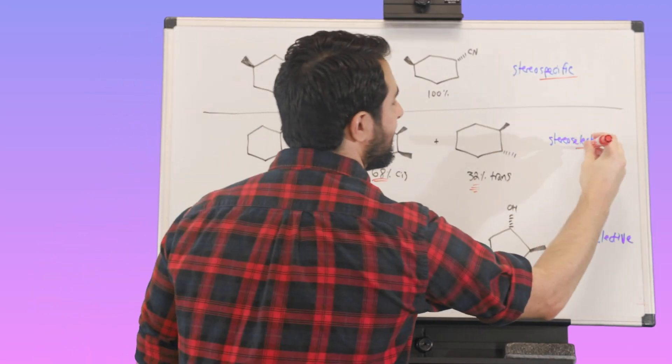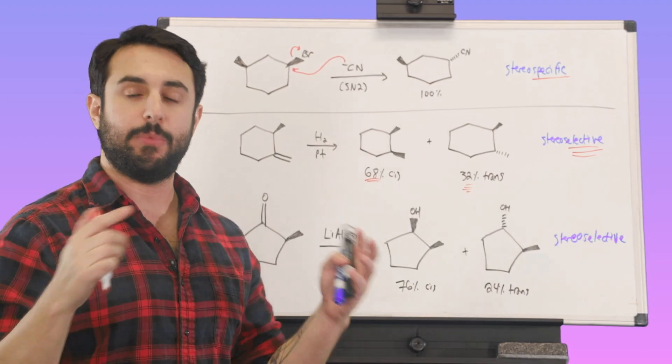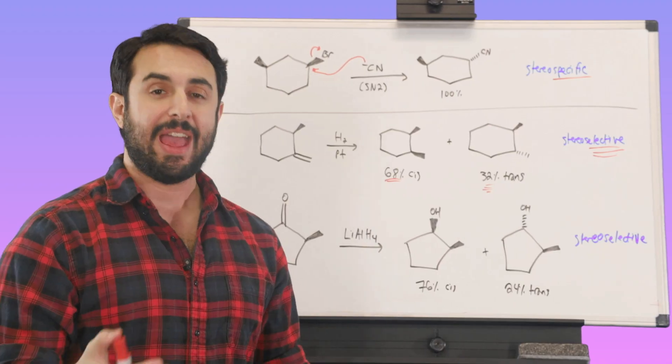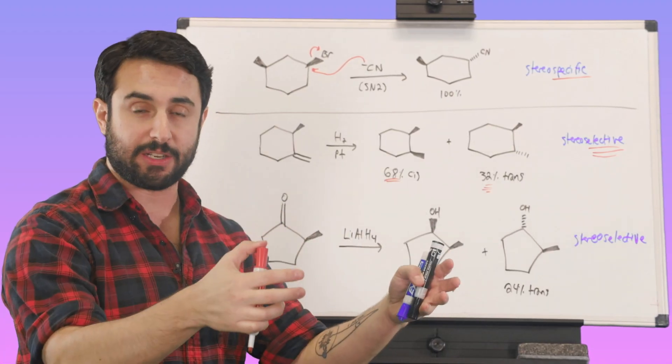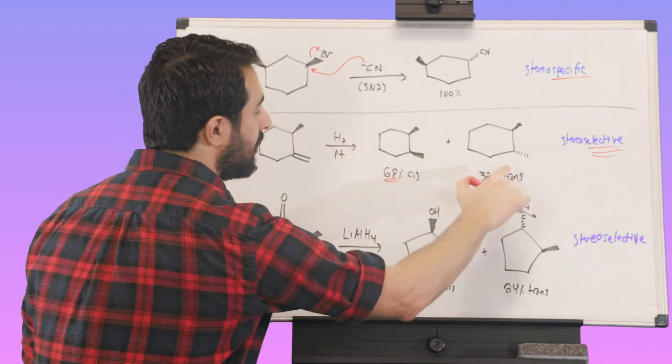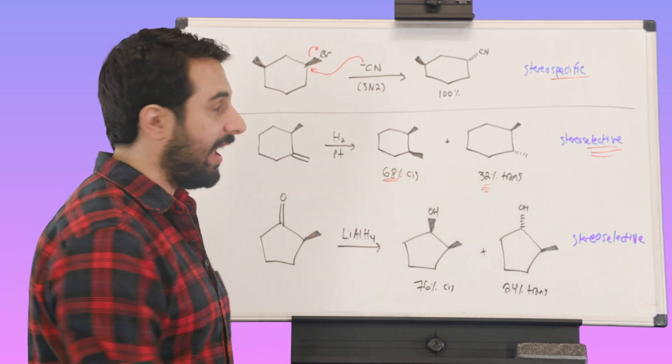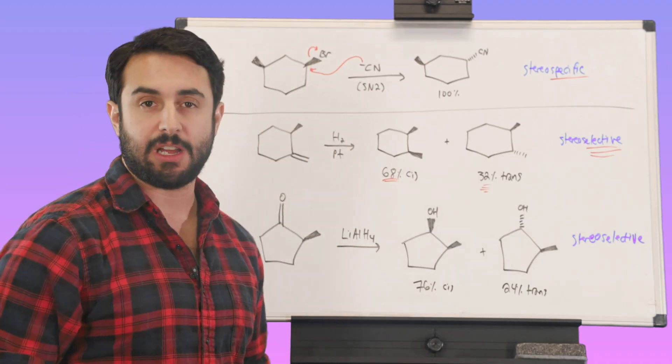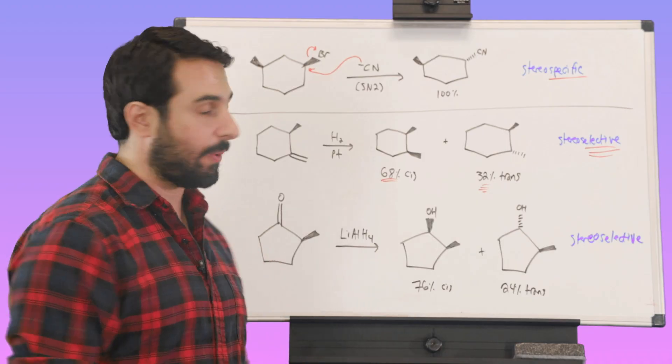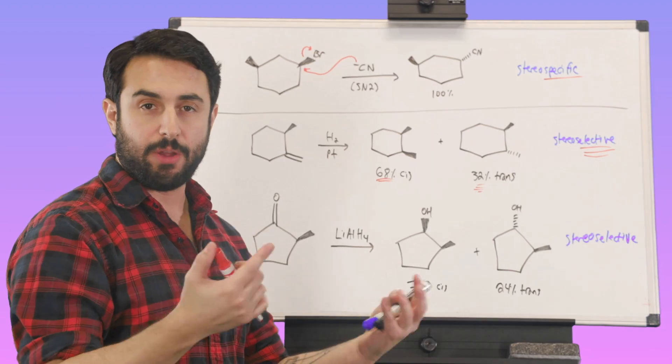And so, the reason we call that selectivity, this is a stereoselective reaction because there's more than one stereochemical possible outcome, and we do get both. However, the system will select one of those products to be more prominent in the product mixture than the other. So we do get both, but we get more of one than the other in a way that is statistically significant and reflects some certain aspect about the substrate or about the reaction in general. In this case, it was all about sterics. It was about the sterics of this methyl group, where that methyl group was pointing for the reaction to go.